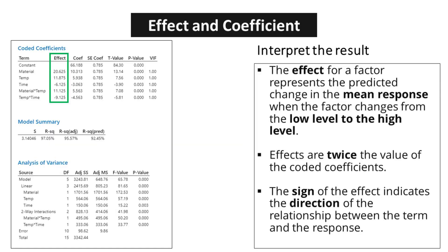The effect for a factor represents the predicted change in the mean response when the factor changes from the low level to the high level. It's important to note that effects are twice the value of the coded coefficients. This relationship allows us to quantify and measure the impact of a factor on the response. Furthermore, the sign of the effect indicates the direction of the relationship between the term and the response.